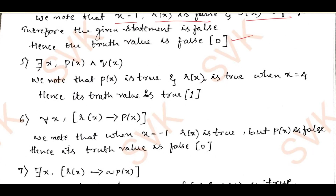Moving on to the fifth: there exists x, p(x) ∧ r(x). We note that p(x) is true and r(x) is true when x = 4, since r(x) is true for x = 4 and x is positive, so p(x) is true. Therefore true ∧ true is always true. The given proposition has truth value true.